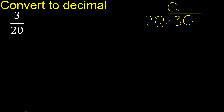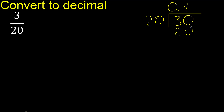20 multiplied by what number is nearest to 30? 20 multiplied by 2 is 40 — that's too much. Multiplied by 1 is 20, which is the nearest number. Subtract: 30 minus 20 is 10.